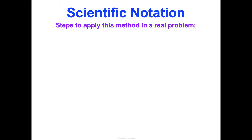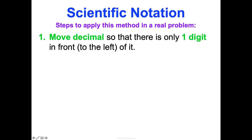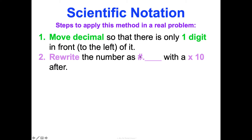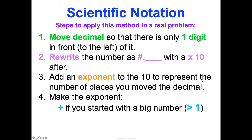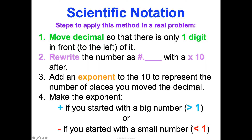Here are the steps. When you have a number in standard notation and want to put it in scientific notation: first, move the decimal so there's only one digit to the left of it. Then rewrite that number — digit, decimal point, remaining significant digits — with a times 10 after it. Then add an exponent to represent the number of places you moved the decimal. The exponent is positive if you started with a big number, and negative if you started with a very small number — less than one.